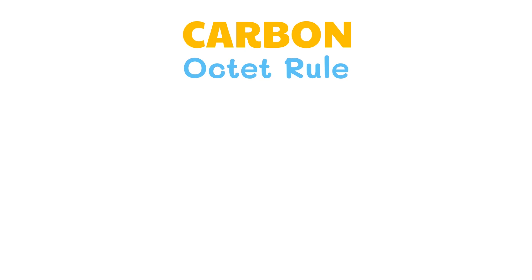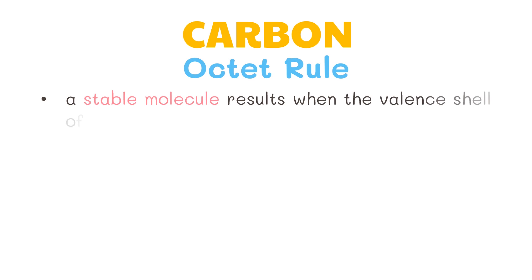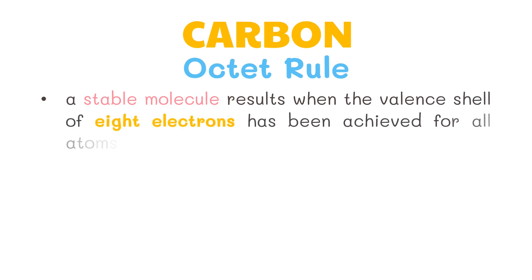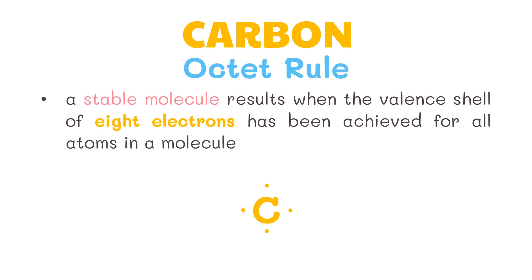According to the octet rule, a stable molecule results when the valence shell of eight electrons has been achieved for all atoms in a molecule. For carbon to be stable, having four valence electrons, it needs four more. Four atoms of hydrogen can form four covalent bonds with carbon. Bonds are usually represented by a short straight line connecting the atoms, with each bond representing a shared pair of electrons.